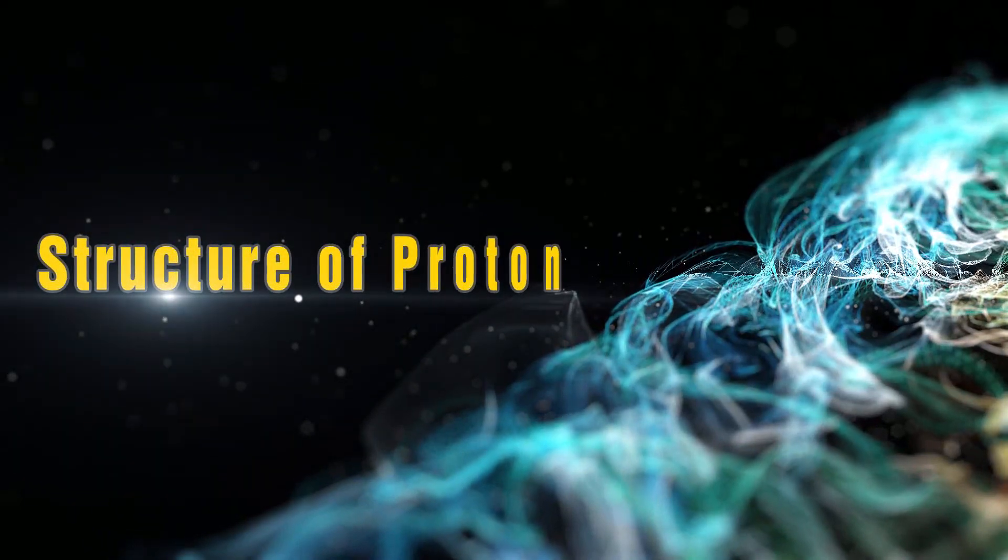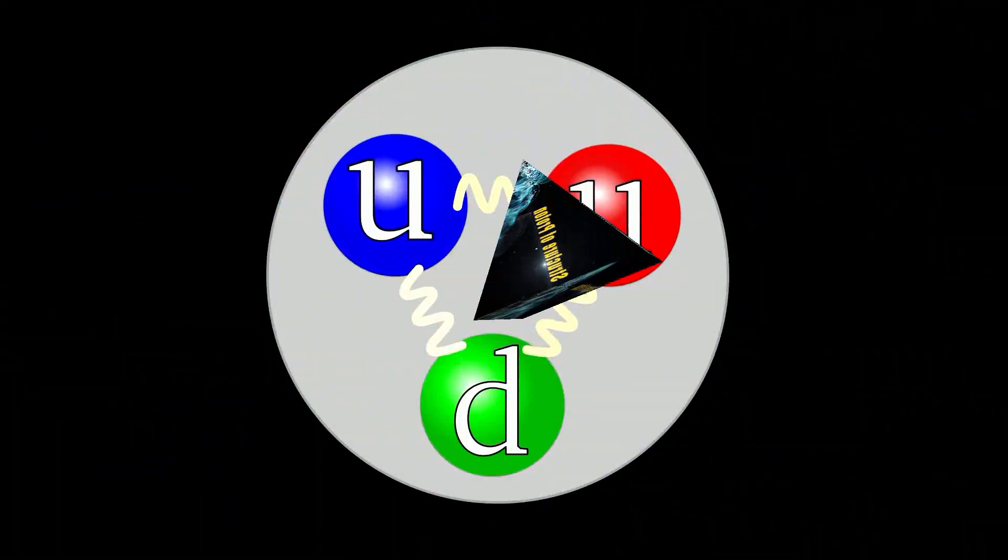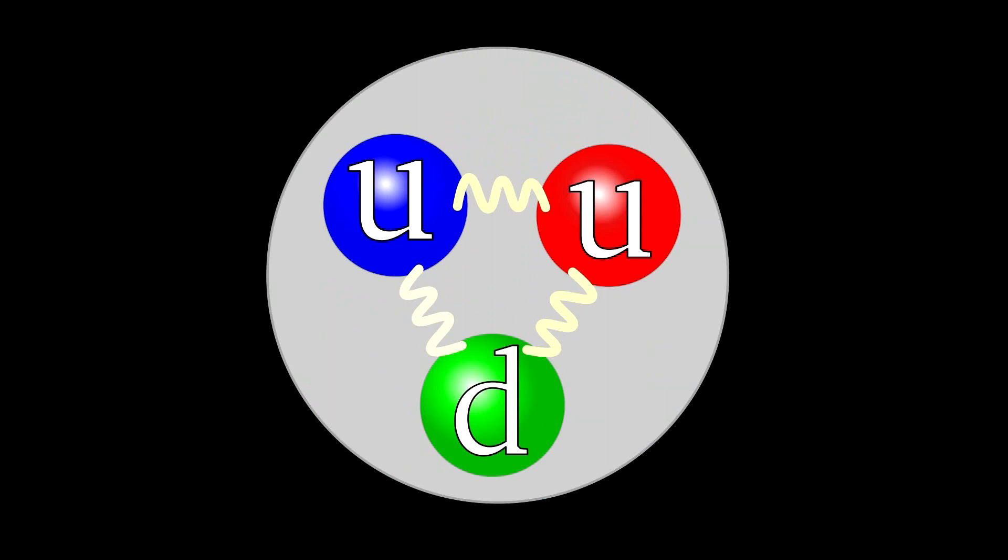The structure of a proton. Scientific achievements show that the proton contains two up quarks and a down quark. But how does Solich theory explain it?